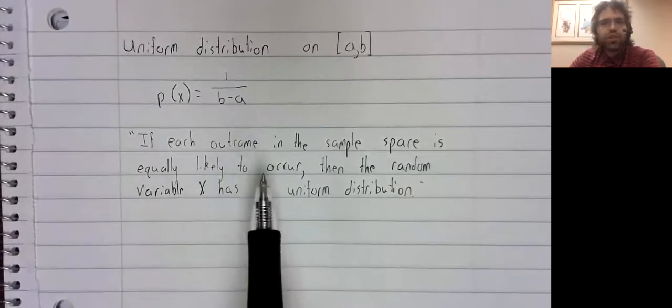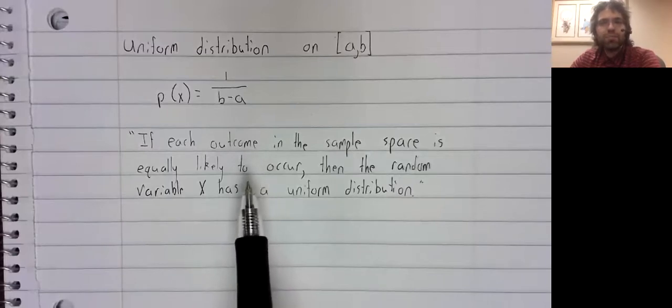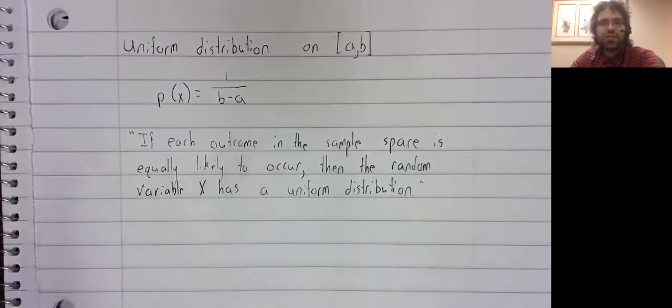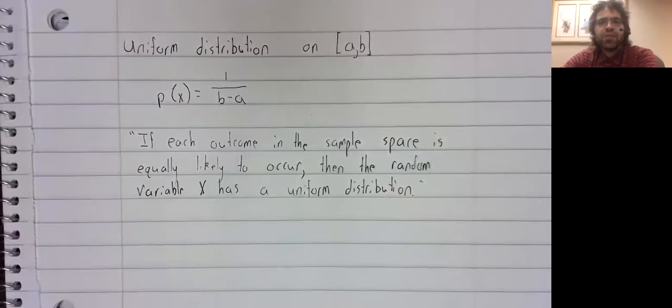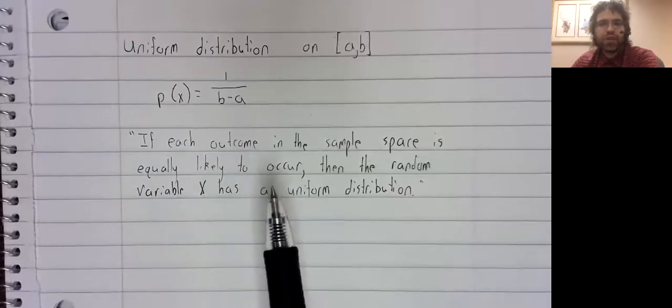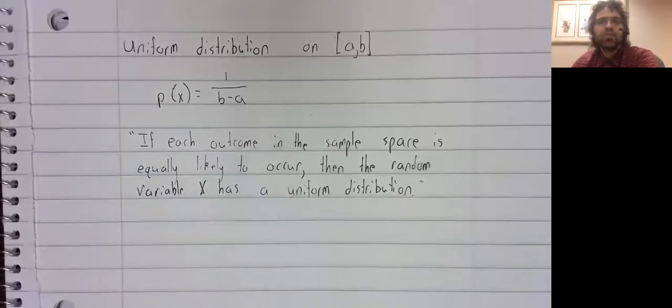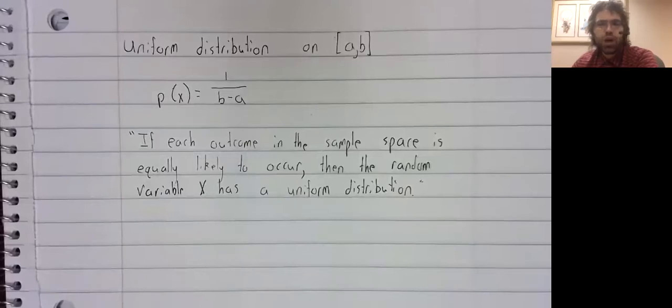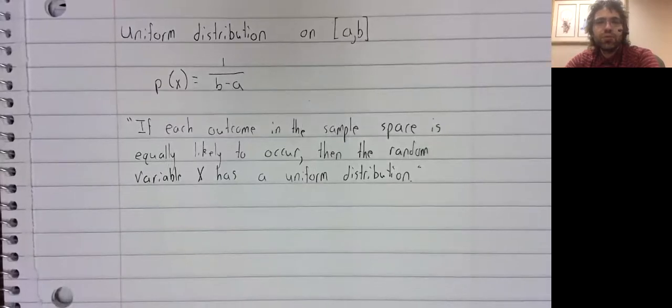This is actually wrong, as the textbook states it. If X is a continuous random variable, then the probability of any given event is always zero. So every continuous random variable has this property. Each outcome has probability zero, so each outcome is equally likely to occur.